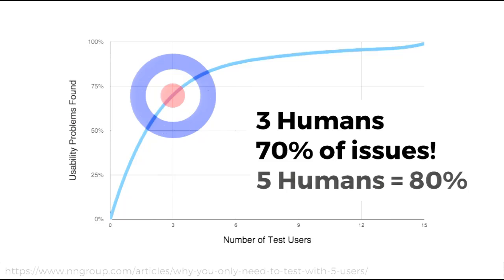Steve Krug talks about guerrilla usability with this scenario: if you're sitting at your desk and a coworker trips on a carpet, you might chuckle. A second person trips on it — the third person trips on it, and you know there's something wrong. You've got to go see why people are tripping on that carpet. You'll see the same pattern happen in usability tests.